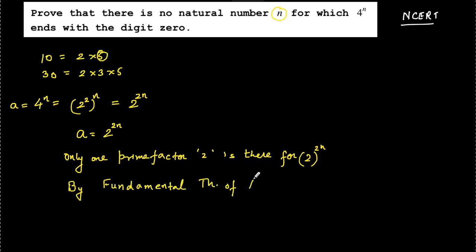So there is no 5. Then by fundamental theorem of arithmetic, we know that any composite number will have unique prime factorization.